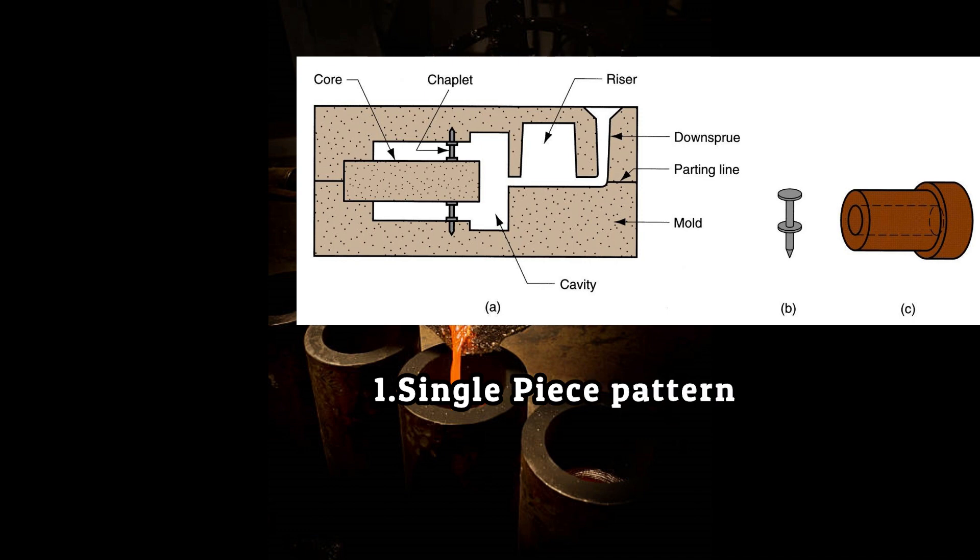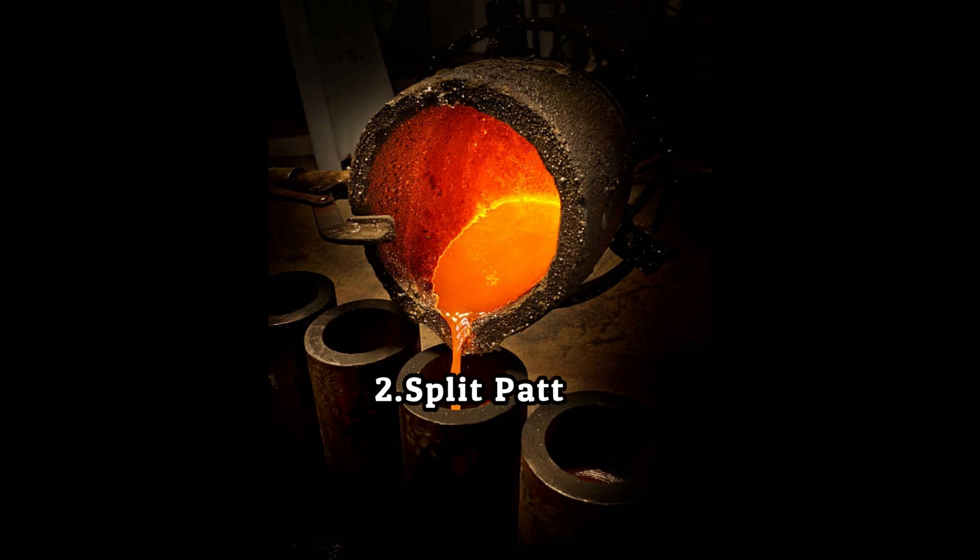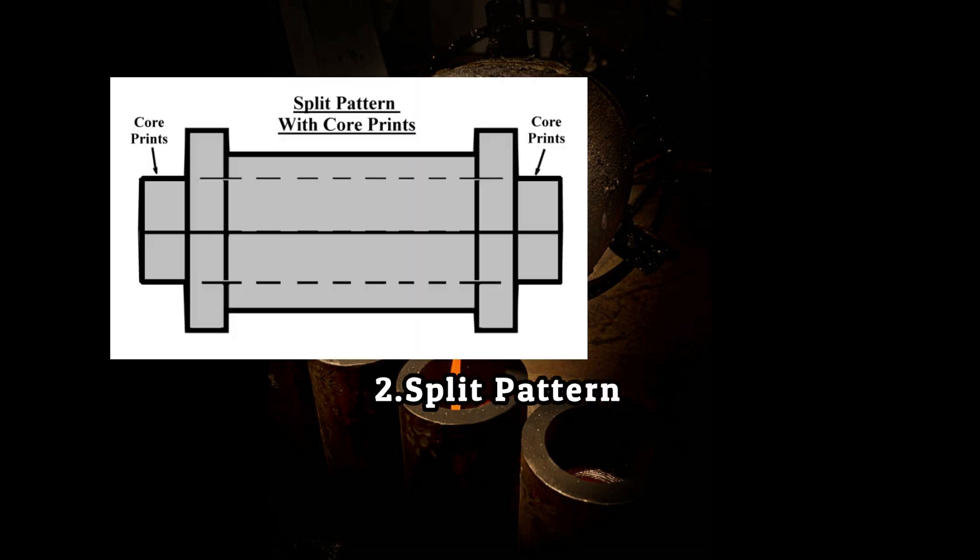The first type is single piece pattern. It is the simplest type of pattern which is made in a single piece. It is used for simple objects and is either placed into the cope or in the drag according to the simplicity of operation. It is used to cast stuffing boxes of steam engines.